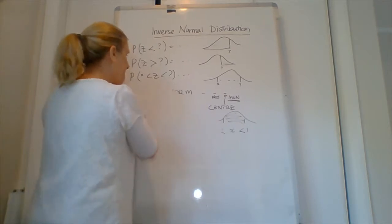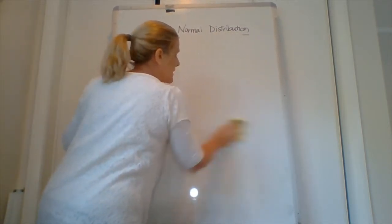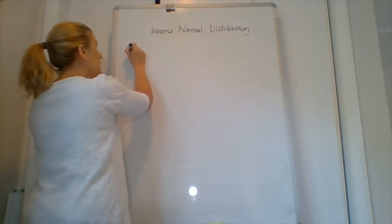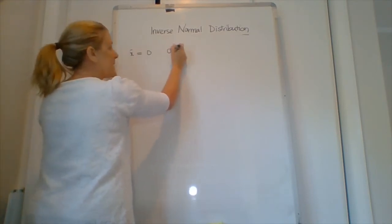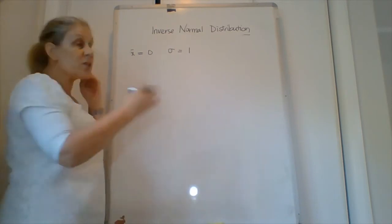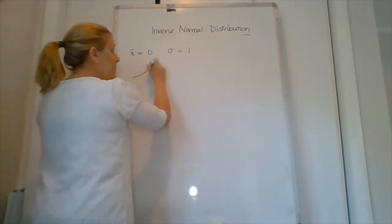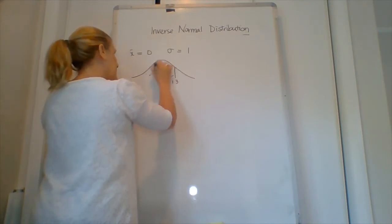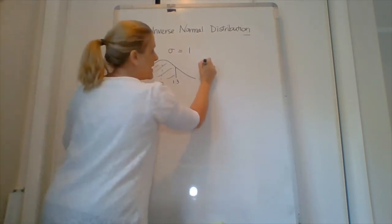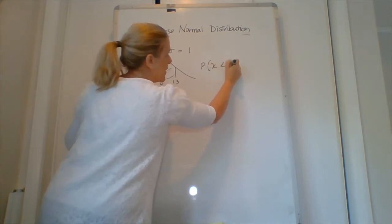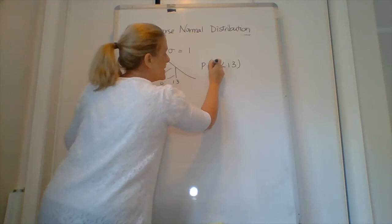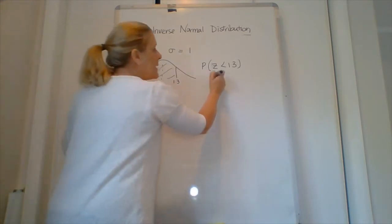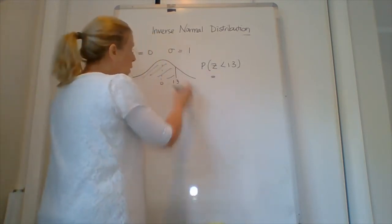I'm going to write this out. So without any words, this one that says what is if the mean is zero and the standard deviation is one. So that's a standard normal distribution like we did first off. What is the probability of getting less than 1.3? So we'd write that as what's the probability that x will be less than 1.3? In this case, actually, it's a z. Why is it? A z is standardized and an x is not. But it doesn't really matter. We're not too worried about that.